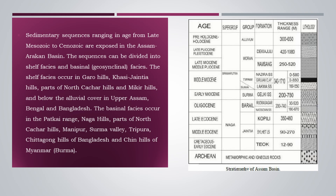The shelf facies occur in Garo Hills, Khasi-Jaintia Hills, parts of North Kachar Hills and Mikir Hills, and below the alluvial cover in Upper Assam, Bengal, and Bangladesh. The basinal facies occur in the Patkai Range, Naga Hills, parts of North Kachar Hills, Manipur, Surma Valley, Tripura, Chittagong Hills of Bangladesh, and Chin Hills of Myanmar.